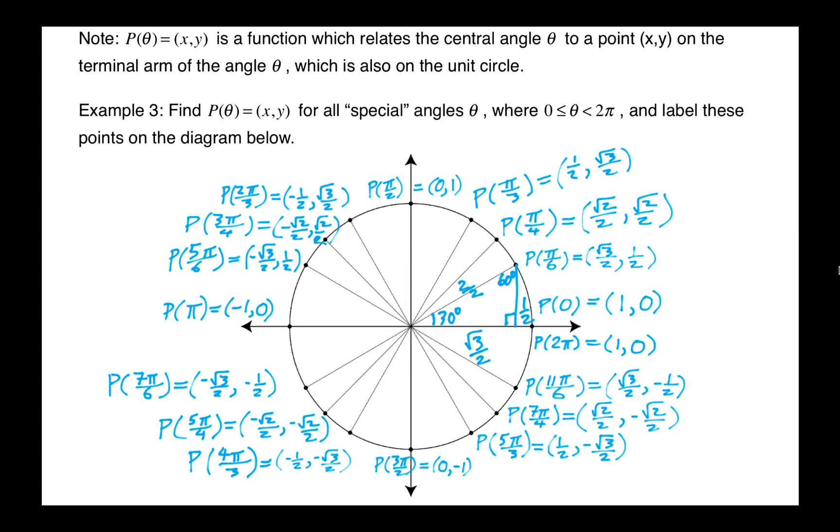Just to explain maybe the last one, for instance, P of 11 pi over 6. This is a 330 degree angle, which is the same as negative 30 degrees. And what you'll notice here is that if you have negative 30 degrees, then you'd have a negative 1 half here. Still a positive root 3 over 2 and 1 for r. So, the x coordinate is root 3 over 2 and the y coordinate is negative 1 half.